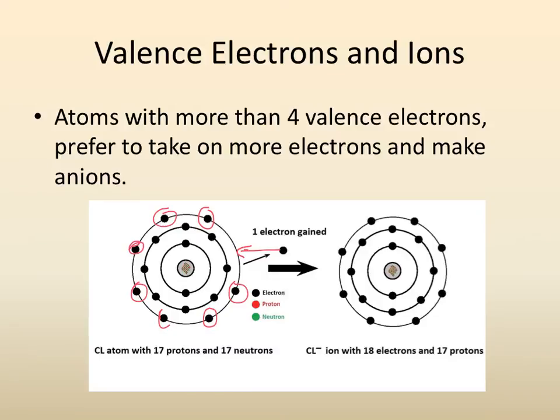Atoms with more than four valence electrons, so we're talking rows 15, 16, 17, they typically pick up extra electrons and become anions.